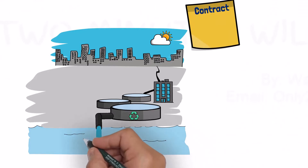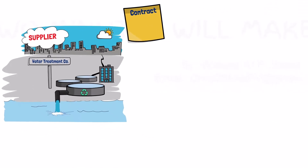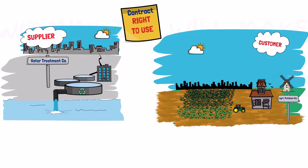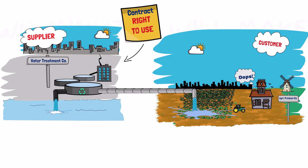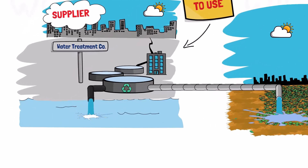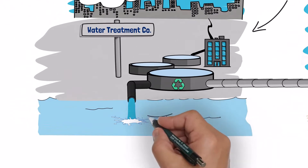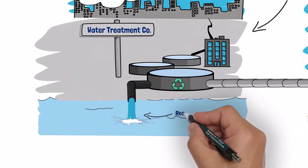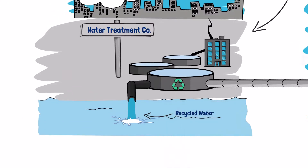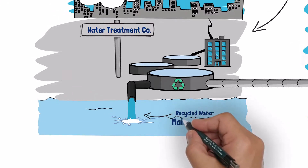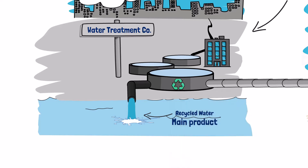For example, assume there is a contract between Water Treatment Co., the supplier, and Agriculture Produce Co., the customer, where the customer is granted the right to use a water treatment facility owned by the supplier, to produce recycled water for irrigating cultivated lands owned by the customer. The economic benefits arising from the use of this facility include the recycled water produced — the primary output of the facility that will be used by the customer for irrigating its own cultivated lands.